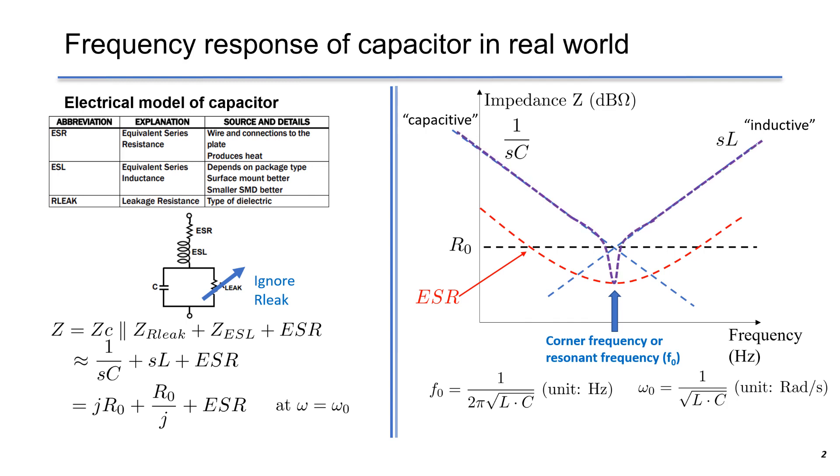As a result, ESR will determine the impedance at F0, which introduces some negative peaking on the magnitude. Again, R0 is called the characteristic impedance. The corner frequency F0 is 1 over 2π square root of L times C. When the frequency is below F0, the capacitor is capacitive.